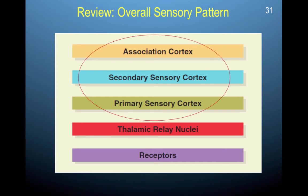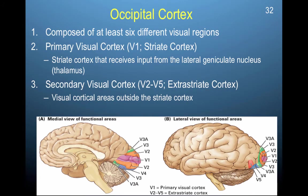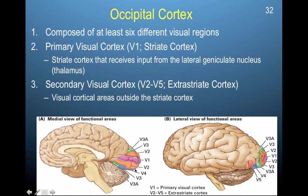After passing through the thalamus, visual information travels to the primary, secondary, and association cortices. The occipital cortex is composed of at least six different visual regions. The primary visual cortex — V1, also known as the striate cortex — is where information arrives first and receives input from the lateral geniculate nucleus. After primary visual input arrives, it travels to the secondary association cortices, known as V2 through V5, or the extrastriate cortex.